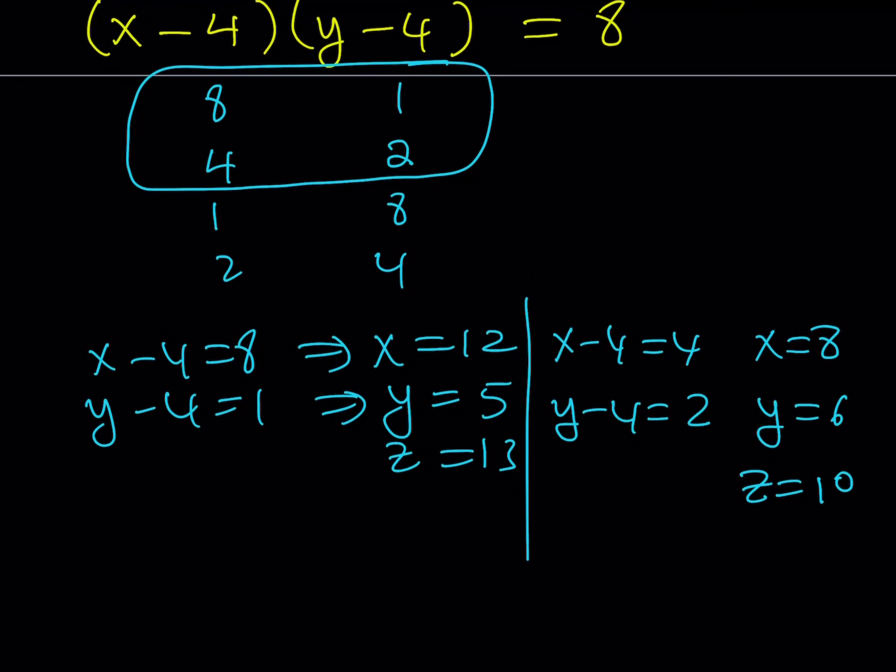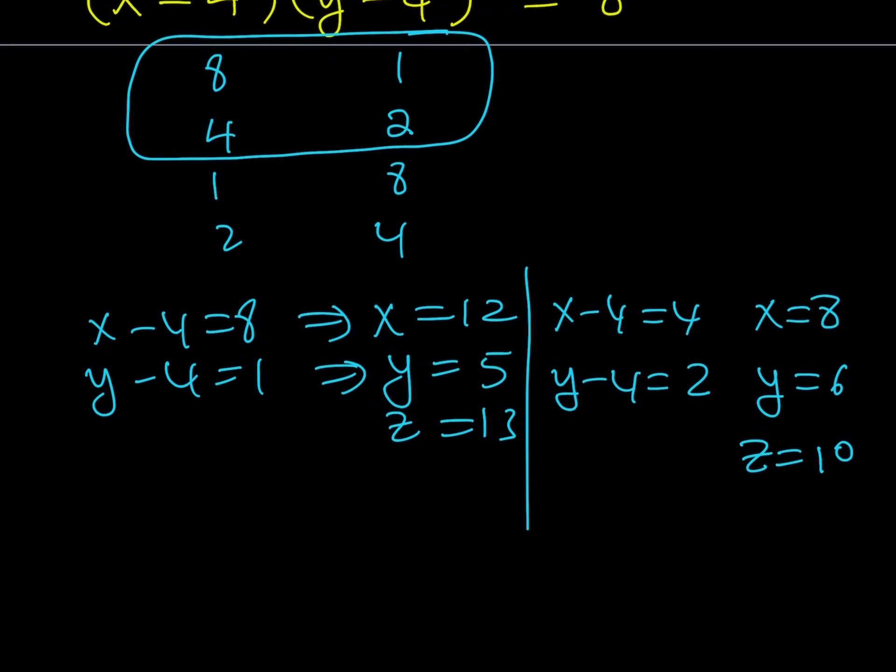So if you're dealing with right triangles, Pythagorean theorem, you should definitely know all these triples, because they're very, very common. 5, 12, 13, and 6, 8, 10. So we have two types of triangles here then.